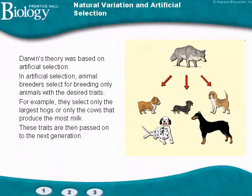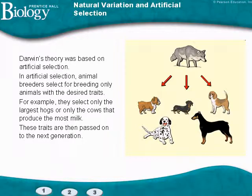Darwin also looked at artificial selection. He knew that animals with desired traits were allowed to breed, while animals without those traits weren't. For instance, the cow that produced more milk was bred to get more milk-producing cows. The picture here shows a wolf as the common ancestor of all dogs — over time, people bred dogs for specific traits and jobs they wanted, and if a dog didn't have the desired trait, it wasn't allowed to breed.